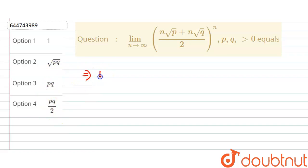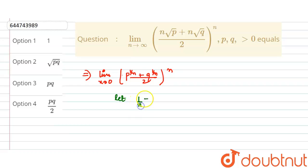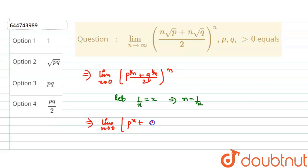We rewrite this as limit x tends to 0. The function becomes p raised to the power 1 by n plus q raised to the power 1 by n, divided by 2, raised to the power n. Now let 1 by n equal x, so n equals 1 by x. Substituting back, the expression becomes limit x tends to 0 of (p^x + q^x) divided by 2, raised to the power 1 by x.